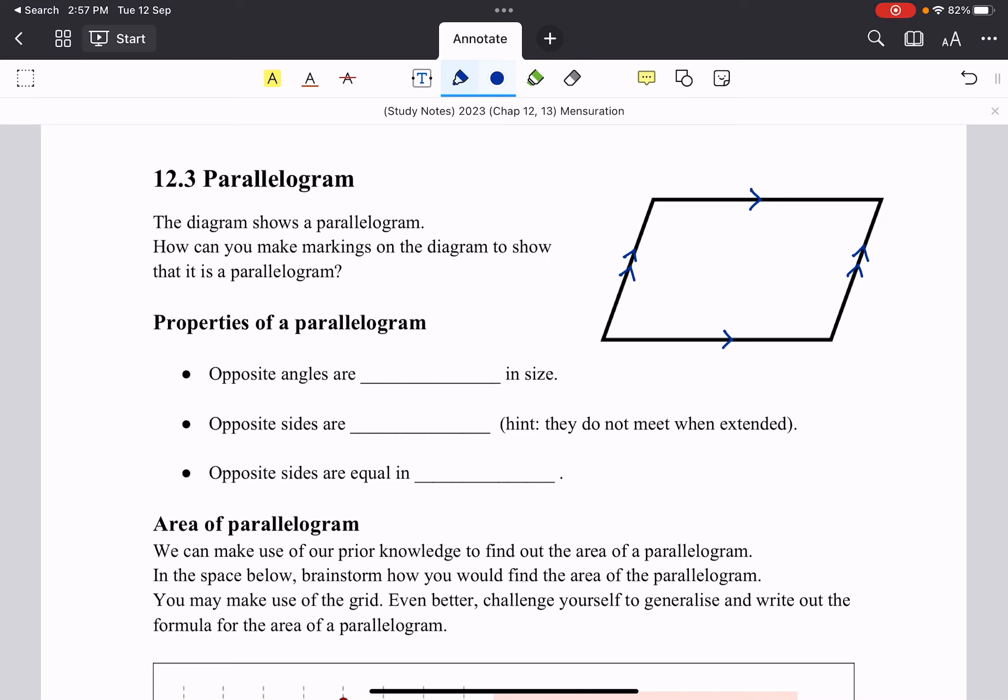So what are some properties of the parallelogram that we should know? Firstly, the opposite angles are equal in size. What this means is that the angle I'm marking on the screen now, this angle in red, is equal to this angle. And this angle here will be equal to this angle in the bottom right. So that's what it meant. Opposite angles are equal in size.